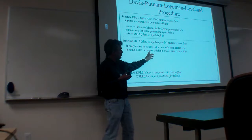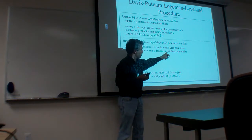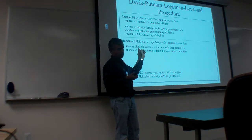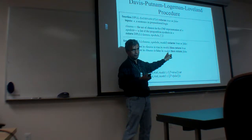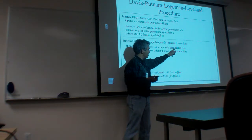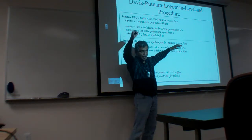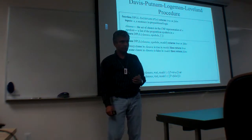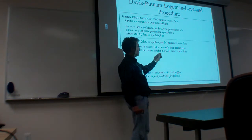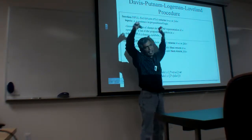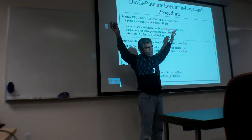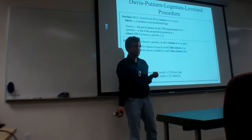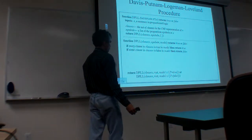Similarly, if some clause in clauses is false in the model, return false. This is every-clause vs. some-clause. If satisfied, you come out of the recursion and return true — meaning I found a model. If any clause is violated, cut out of this recursion and say I failed, then whoever called you should realize they should try the other branch now.